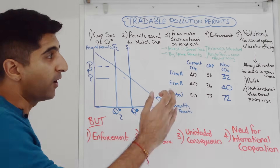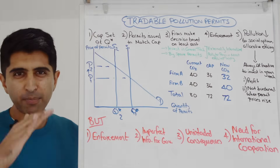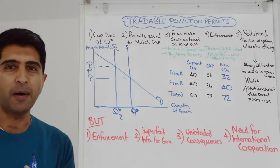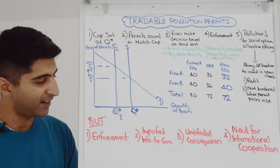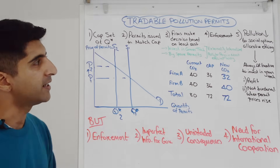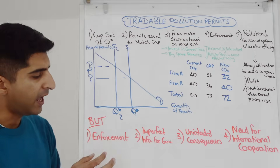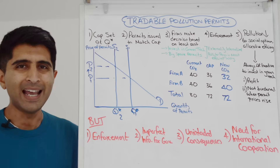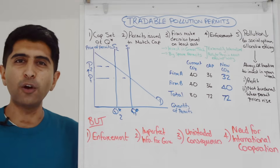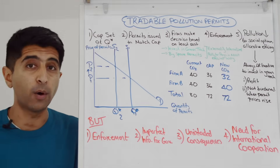However, no policy in economics is perfect — there are issues. The first is enforcement. Can enforcement be afforded, especially in developing countries? If it can't be afforded, the policy won't work. At the same time, is there technology to accurately measure emissions? If either of those isn't in place, firms simply won't follow the policy.